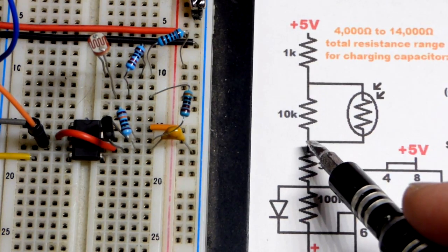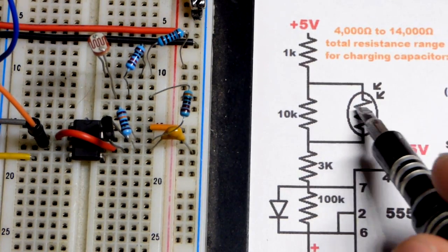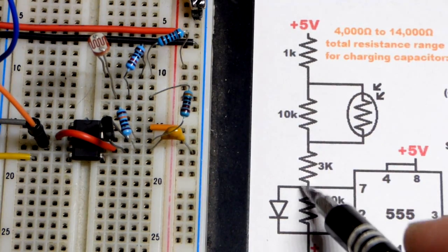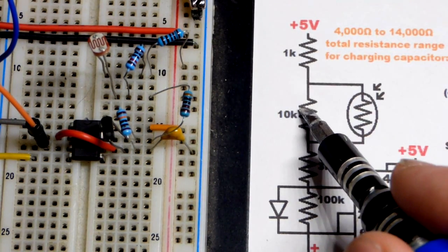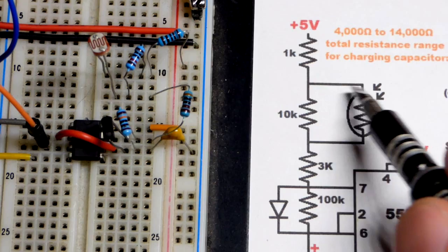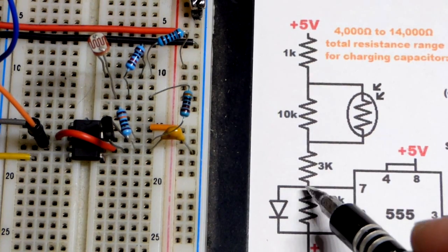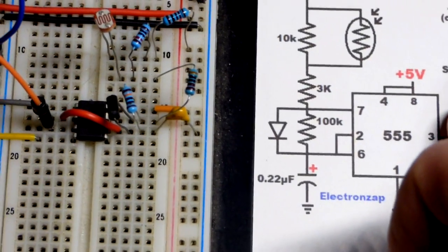More current through this part of the circuit equates to less resistance there. So if this was bright enough it would completely go around the 10k resistor - the 10k resistor would not exist anymore electrically, just the 1,000 and the 3,000 ohm resistor charging the 0.22 microfarad capacitor.